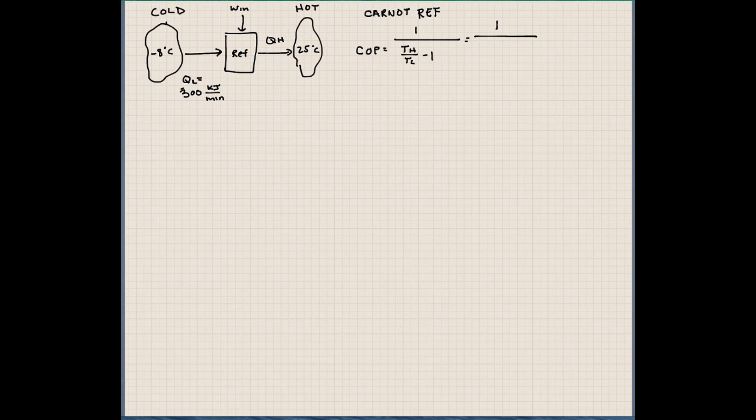We have also the values of TH and TL. So that's why I selected this equation, because we had those values. So this is 25 plus 273 divided by minus 8 plus 273 minus 1. So our coefficient of performance for this refrigeration cycle is 8.03.